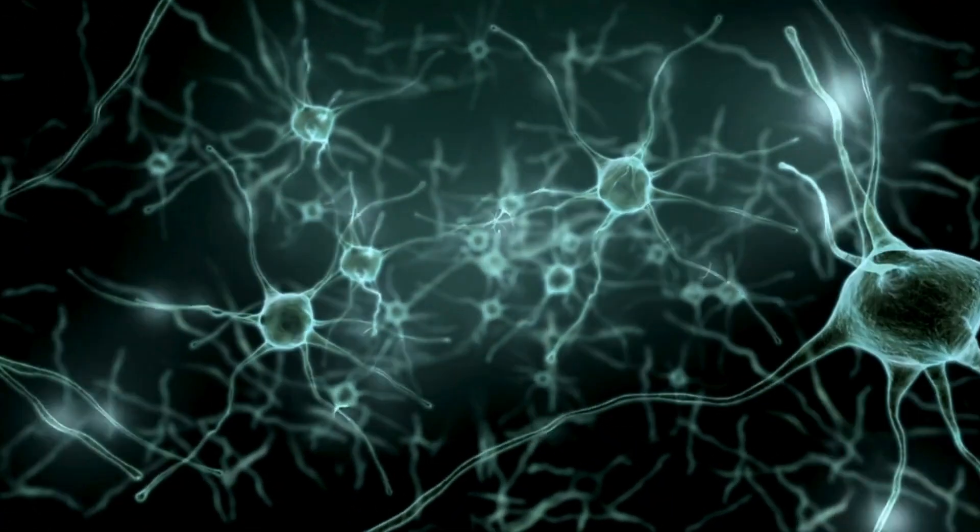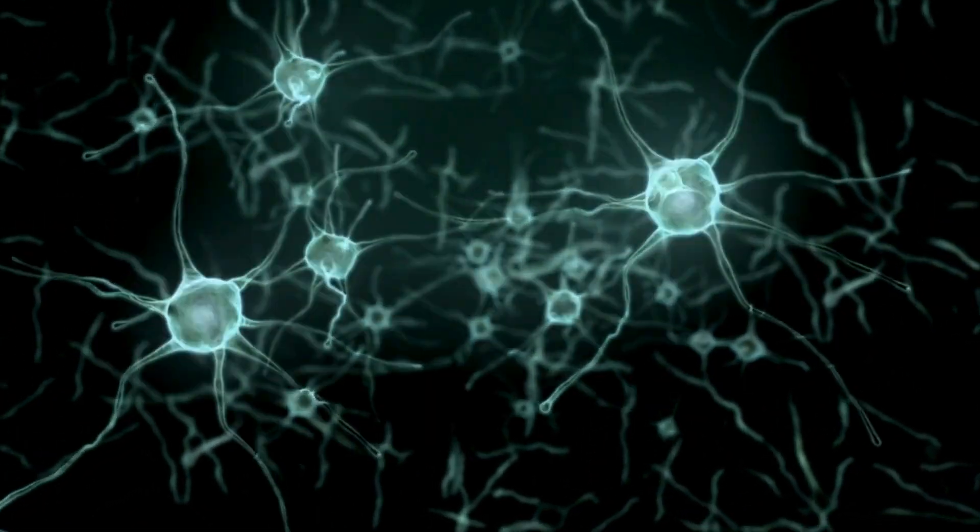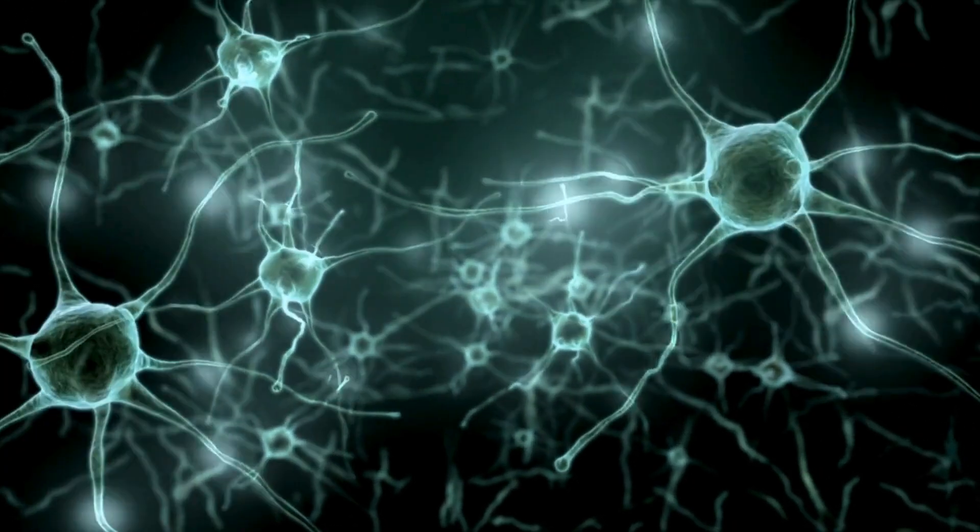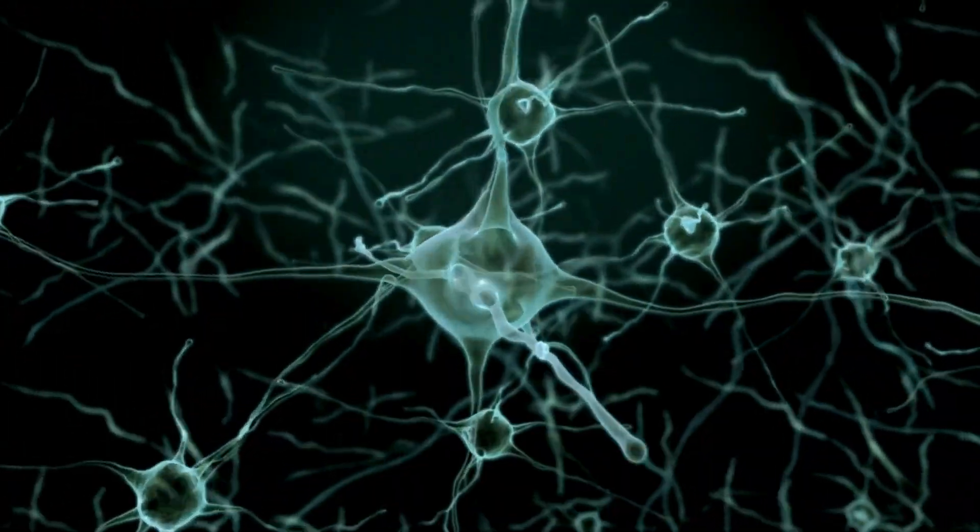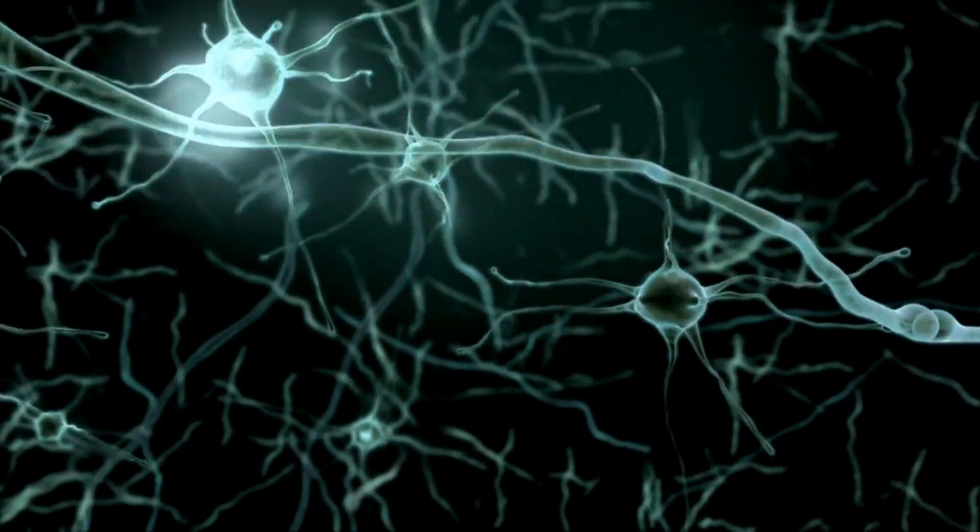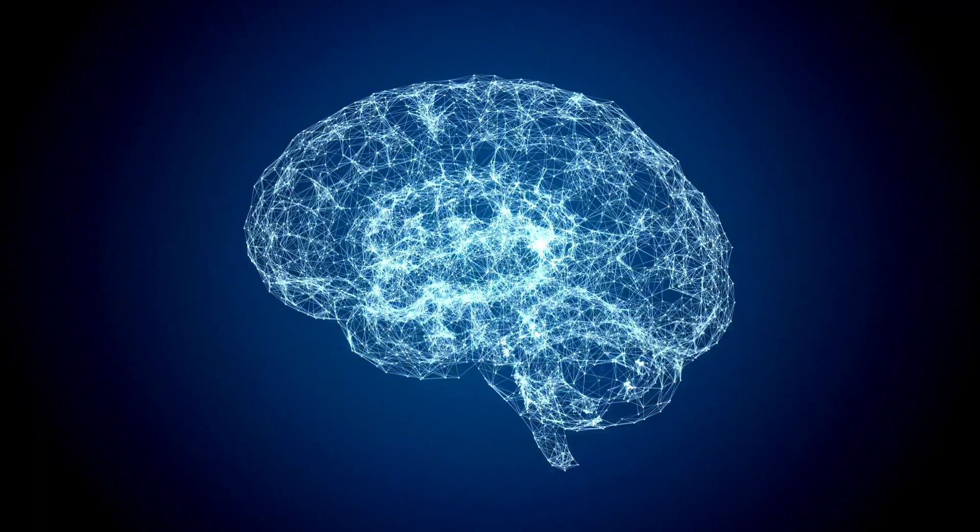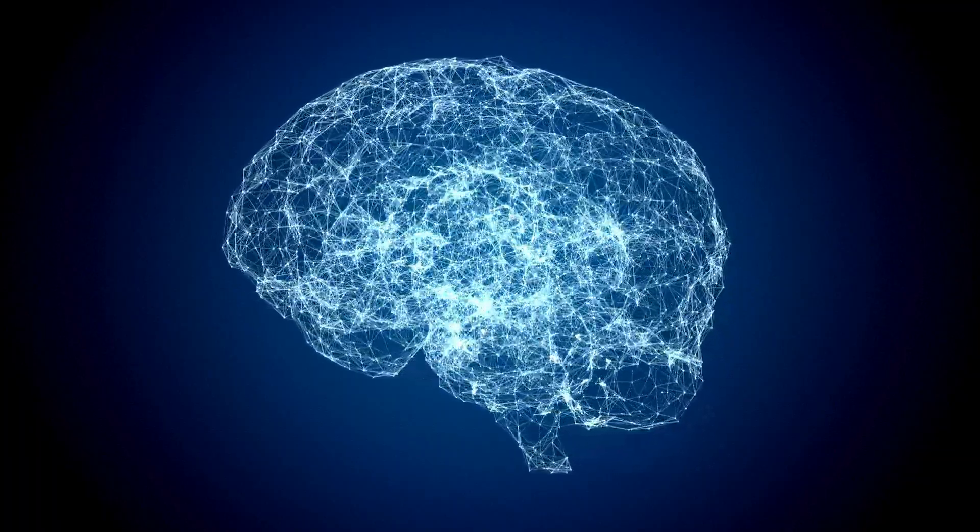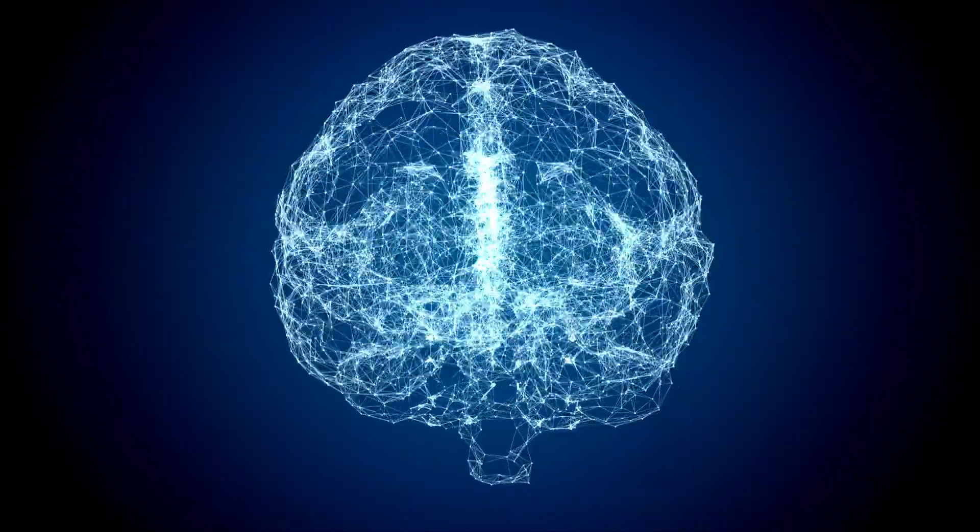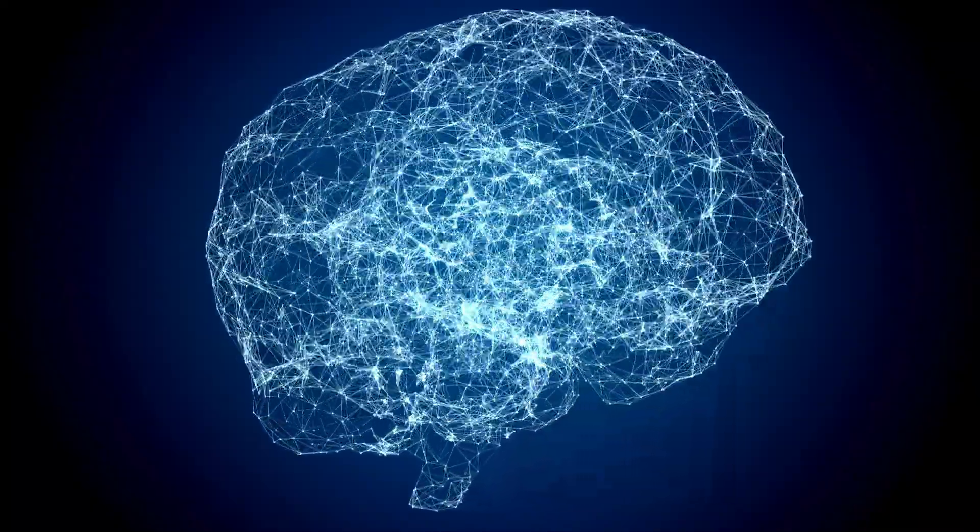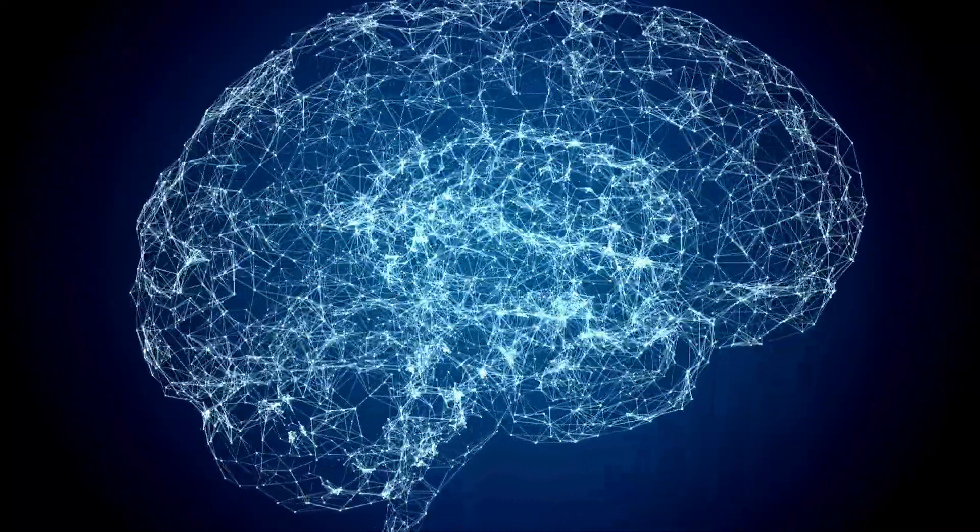But the importance of oligodendrocytes goes beyond myelin formation. These cells also play a role in brain plasticity, the brain's ability to change and adapt throughout life. They can respond to environmental stimuli and modify the amount and distribution of myelin in response to these stimuli, contributing to learning and memory.